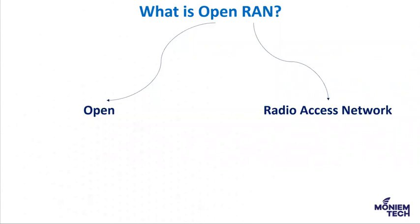Open RAN is made of two parts. The first part is 'Open' and the second part is 'RAN'. The first part, 'Open', refers to the use of open interfaces. That means you first need to understand what the interfaces are between components in the RAN. When interfaces between various network elements are open, hardware and software from different vendors can be used in the same network.